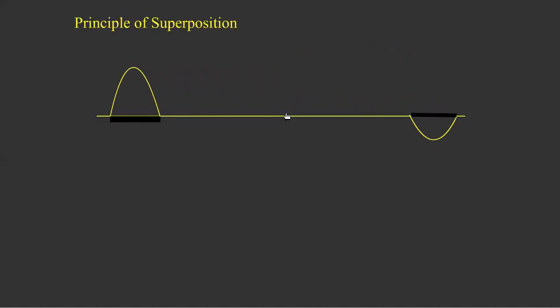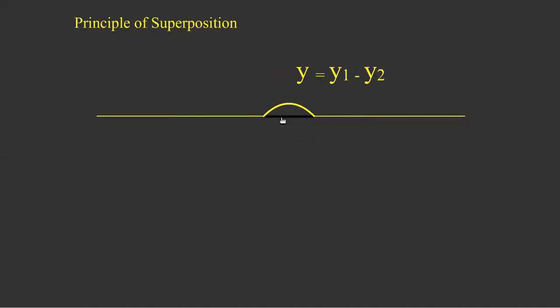Now let us consider one crest and one trough. As they superpose, the crest pulls the particle up and the trough pulls the particle down. But if the pulling of the crest is greater than the pulling of the trough, we get a resultant crest. The result is Y equals Y1 plus Y2.